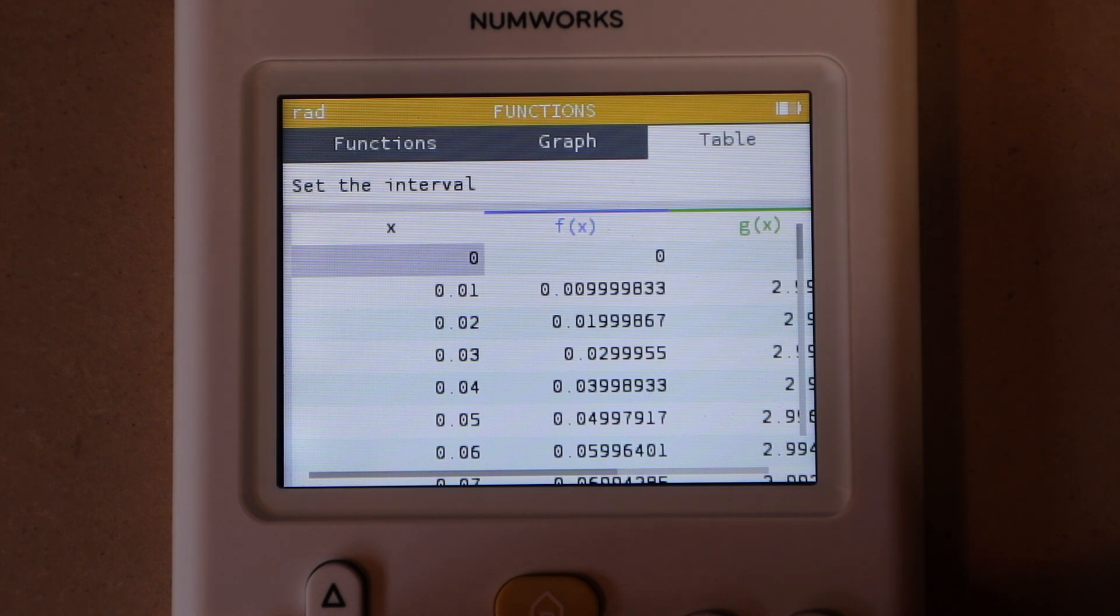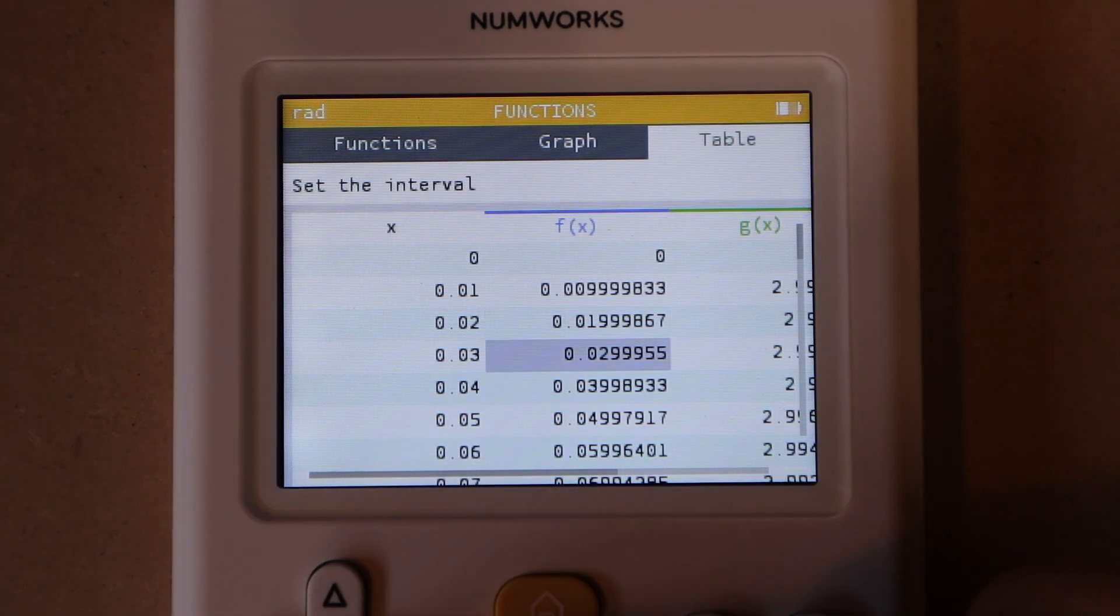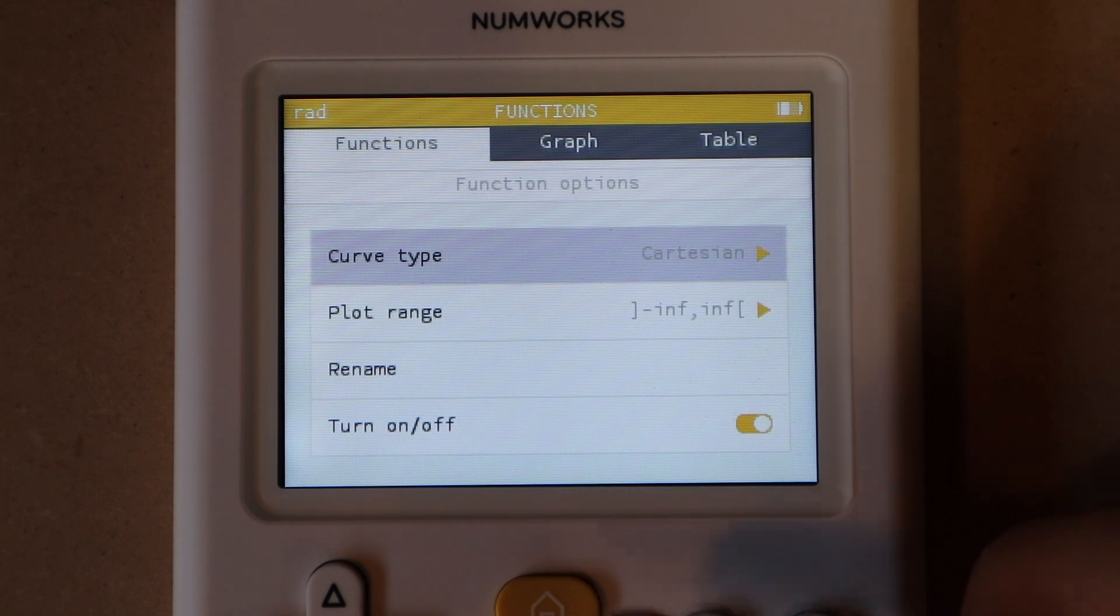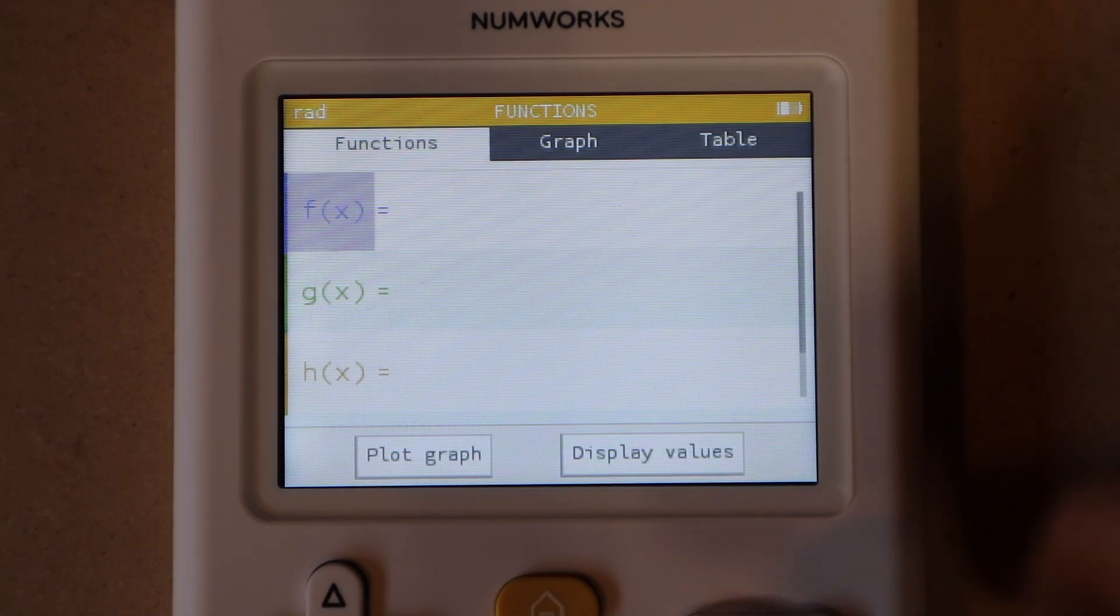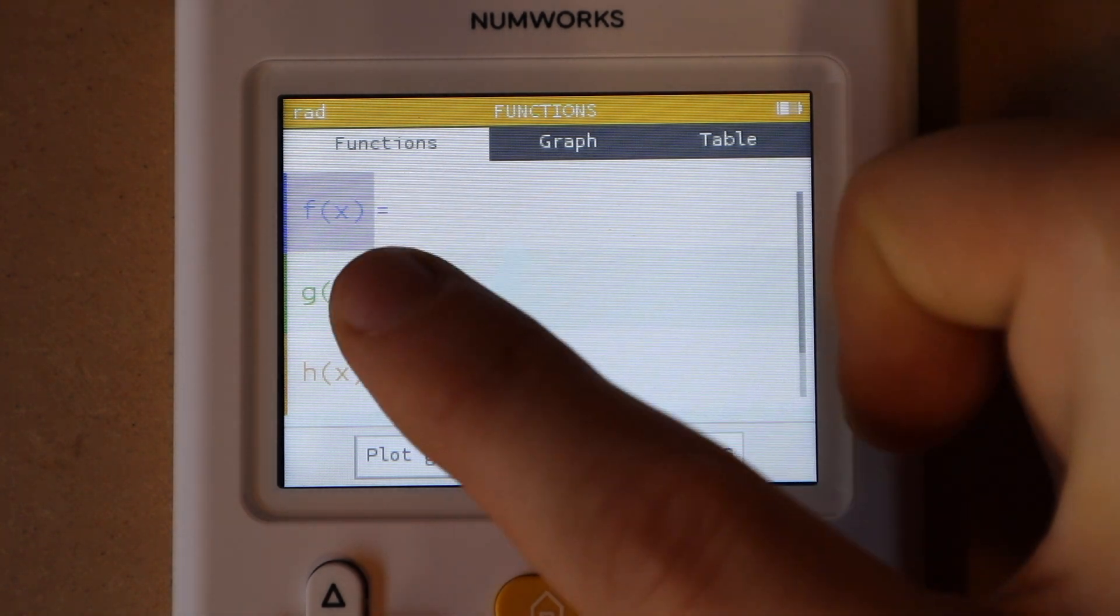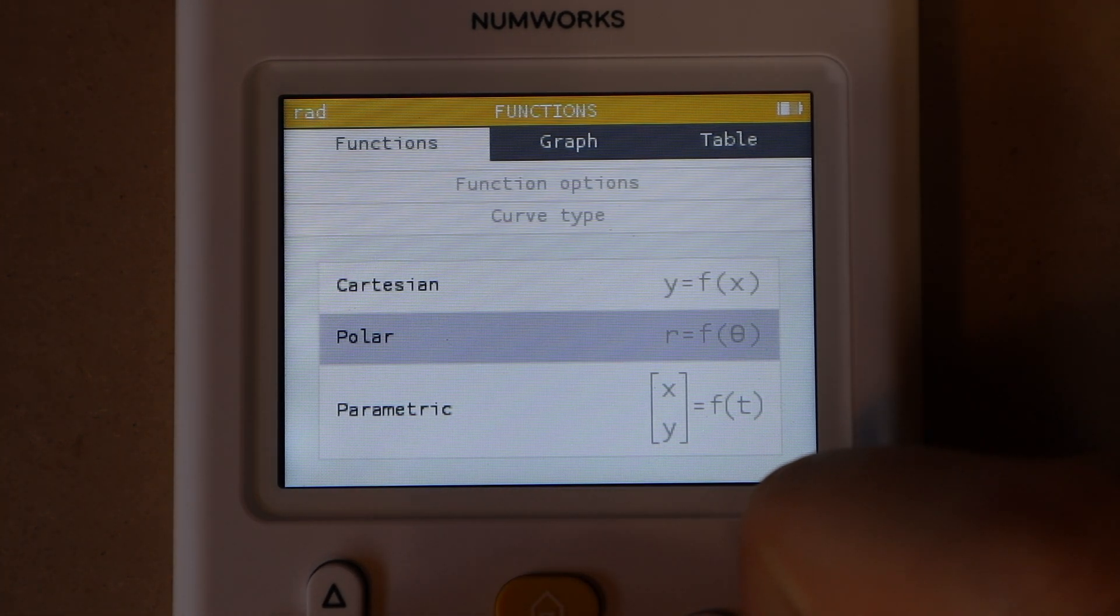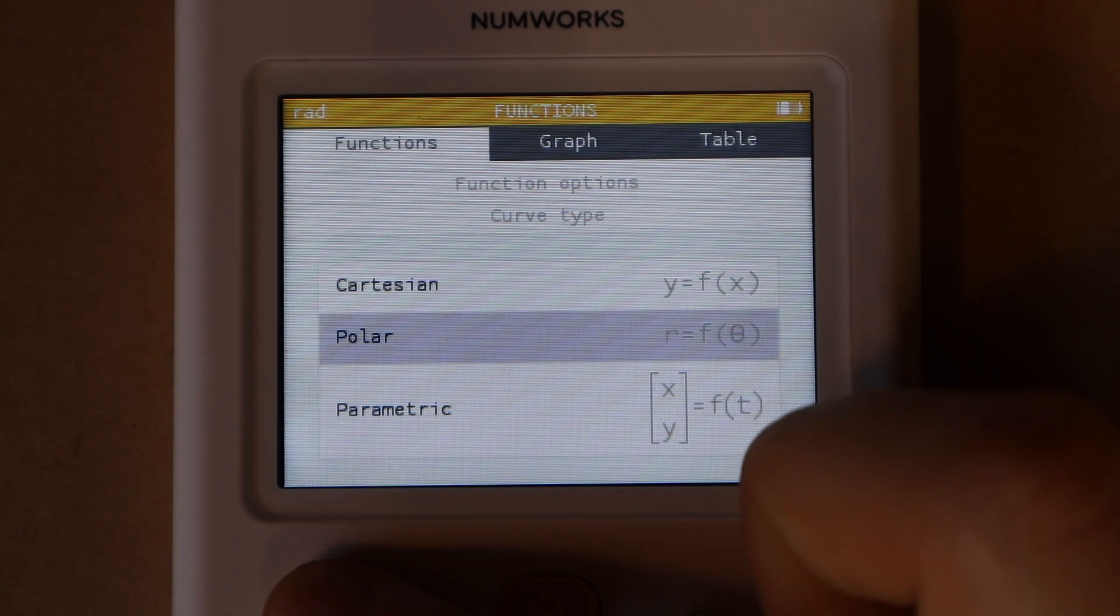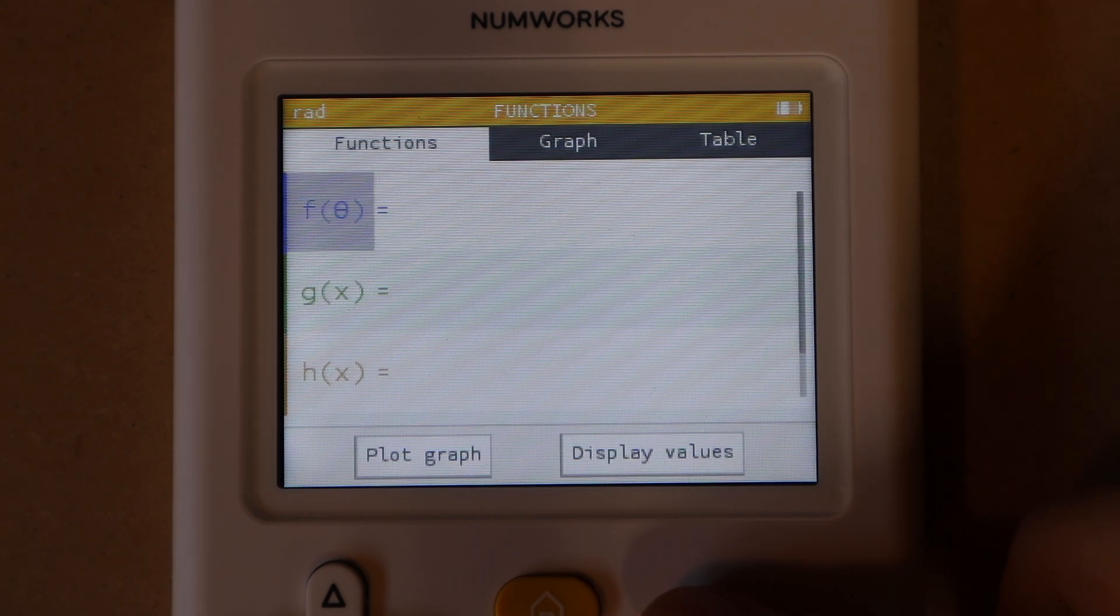Then hit confirm there, and you can see the x values now change by only 0.01 every row and the outputs change accordingly. Added in a recent update was the ability to graph polar coordinates. If you go to your functions menu here and then select the function name, you can change the curve type to either Cartesian, which is just regular coordinates, polar coordinates, or parametric coordinates.